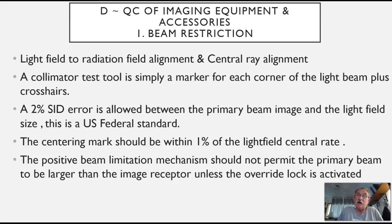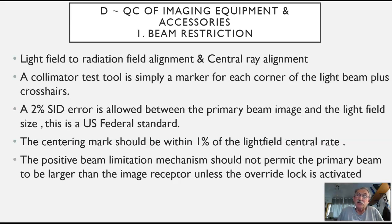Another one of these tests is the positive beam limitation mechanism. Positive beam limitation is that mechanism where you put an image receptor into the Bucky — it recognizes the size and orientation of that image receptor, and it opens the collimator exactly to that size automatically. The intent is that the primary beam is no larger than the image receptor, unless we activate the override lock, which is the exception and not the rule.